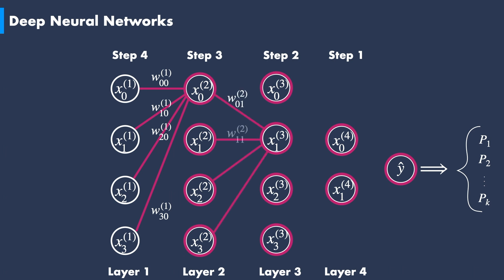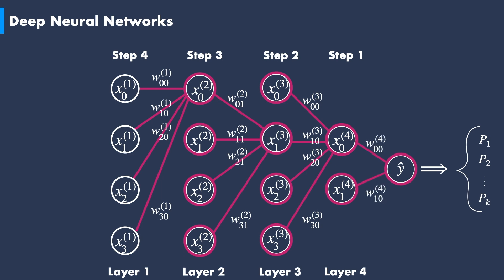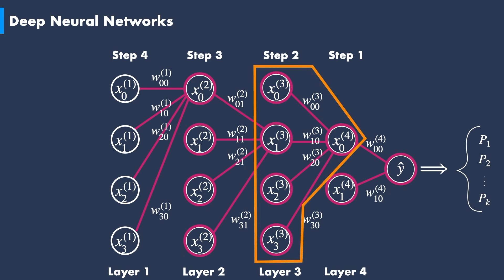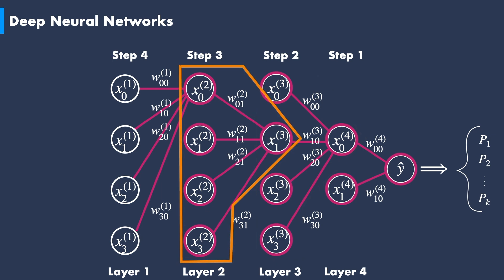The same goes for the third layer — each node is a linear combination of every node from the second layer plus an activation function. Again, every node in the fourth layer is a linear combination of weighted nodes from the previous layer with an activation function. The y-hat prediction is obtained by a weighted linear combination of the nodes from the fourth layer and an activation function. As we can see, this deep neural network is indeed a series of combined perceptrons. Each node can be seen as a single perceptron of the nodes from the previous layer.